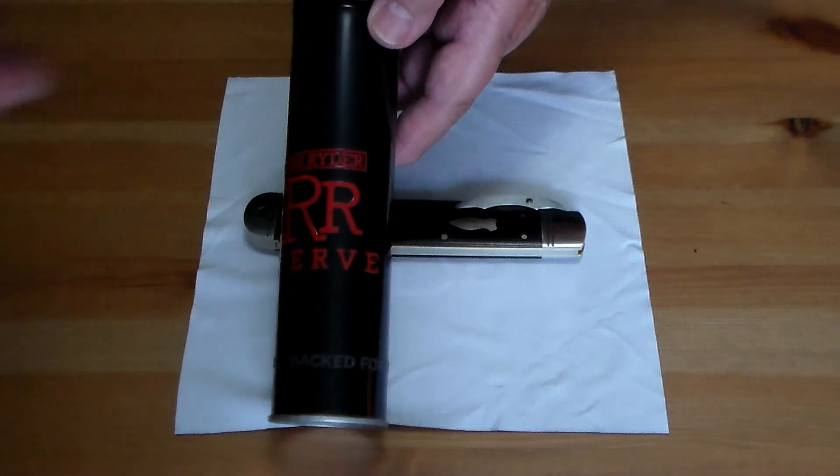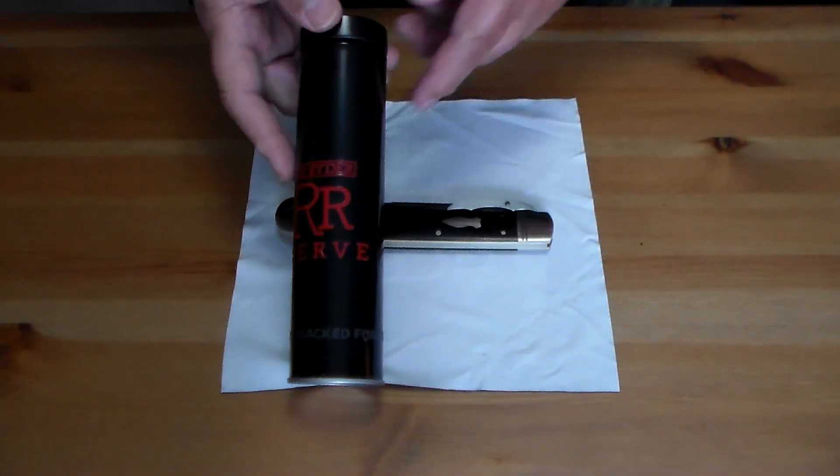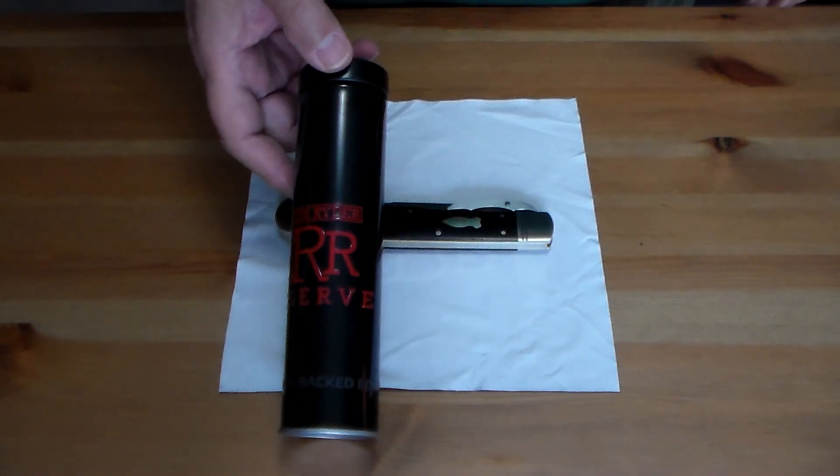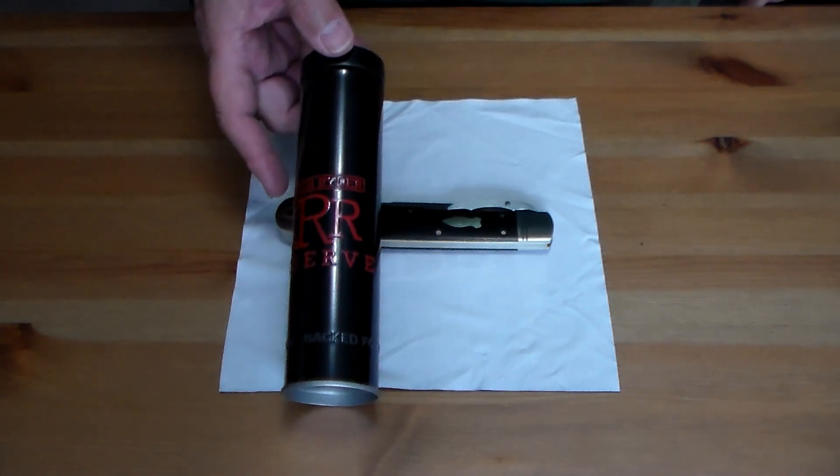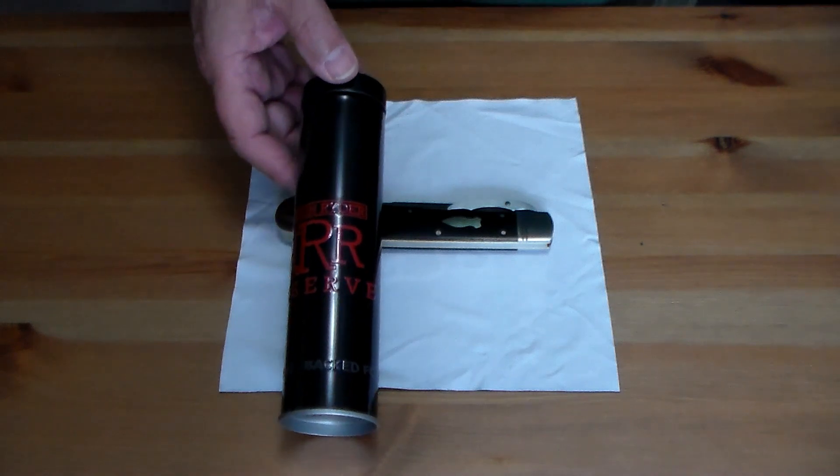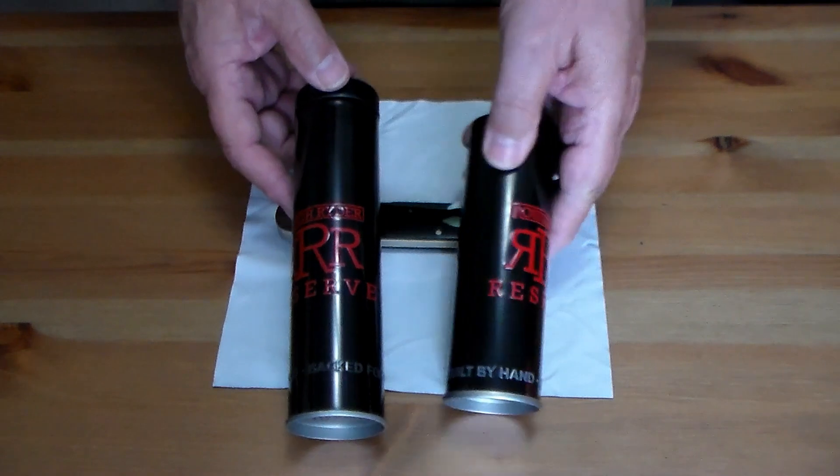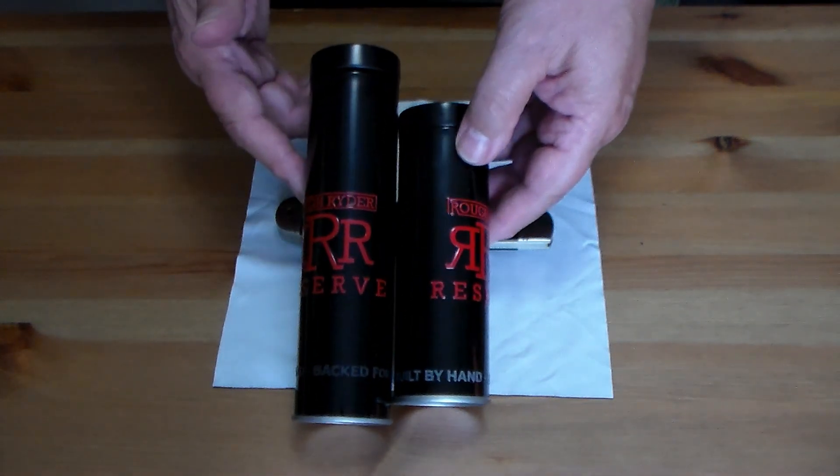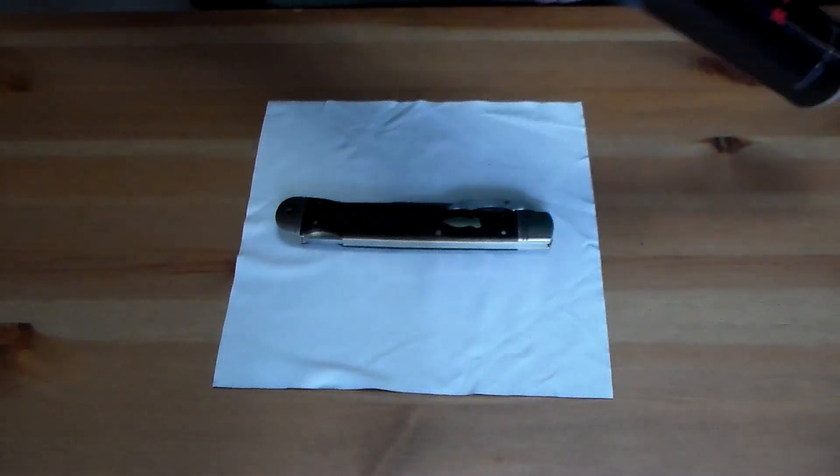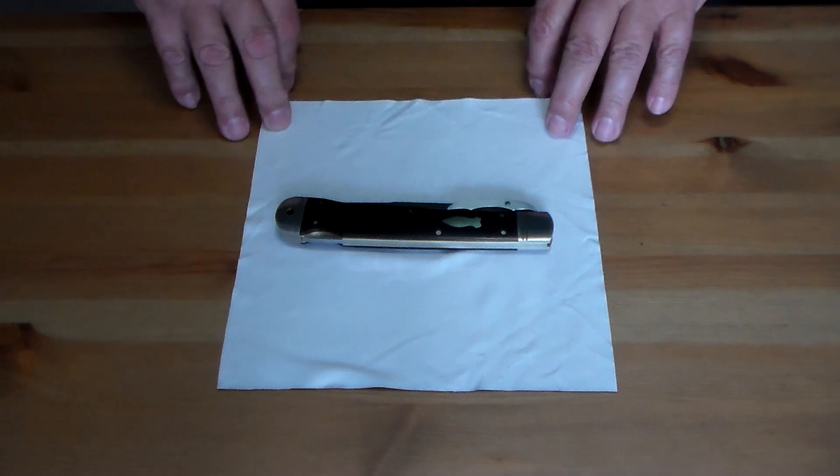Let's zoom out a little bit. It came in the tin, and to show the difference in size of this and the previous Rough Riders, this is the tin for the others. You can see the difference there, so it gives you an idea how big this knife is.